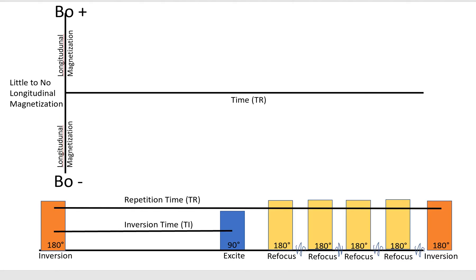In any inversion recovery sequence, it starts with a 180-degree inversion pulse, and then there is a certain time between that 180-degree inversion pulse and the 90-degree excitation pulse. Assuming it's a fast spin echo, it will have an echo train of 180-degree refocusing pulses. The distance between one 180-degree inversion pulse and the next one is our repetition time, TR — which at its core is how much T1 recovery time we allow between inversions.